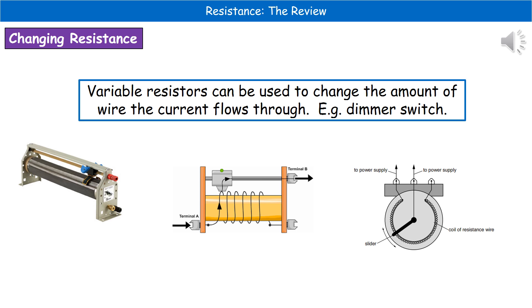You'll notice that we've got that coil of wire. The more of that wire that we actually allow the current to flow through, the greater the resistance will be. If the question was to ask how you could increase the resistance in that particular circuit, you could say to move the little slider to the right or towards terminal B, because that means it's going to have to pass through more of the coils of wire, so a greater length.